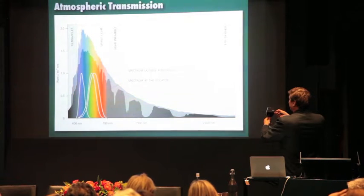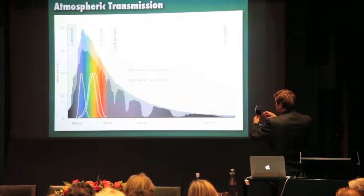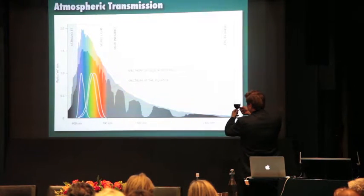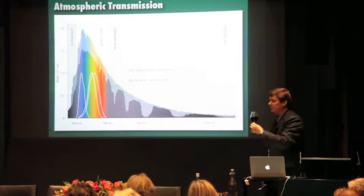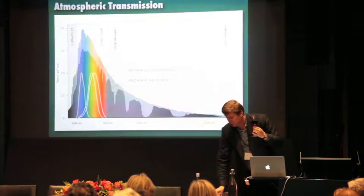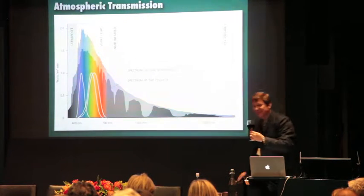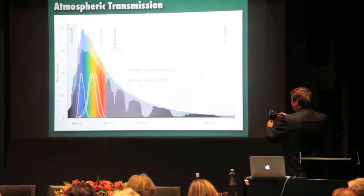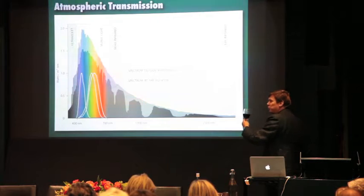Blue light — yeah, nice blue spot on the screen. Move it down — it disappears completely, and actually, no matter what I do, I can't make a blue spot appear on the screen through a glass of red wine. I shall drink the rest of it in a moment. Green, exactly the same — we lose the green light into the red wine.